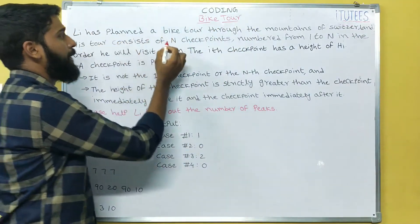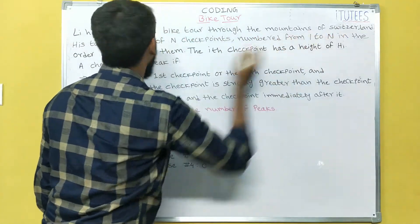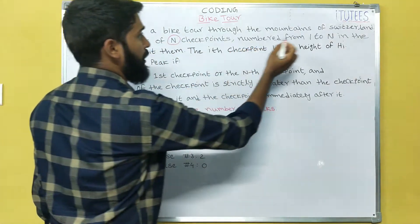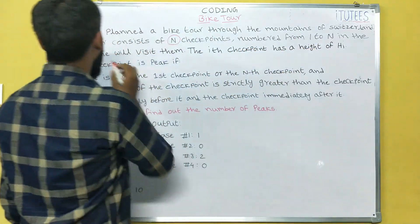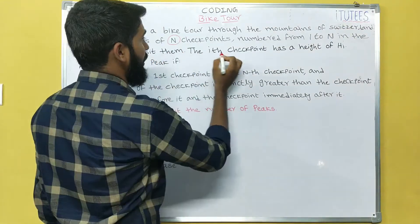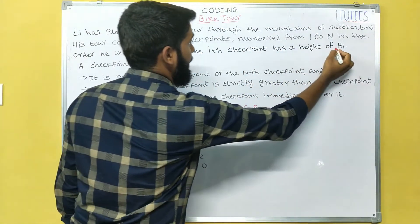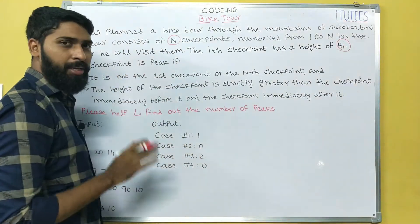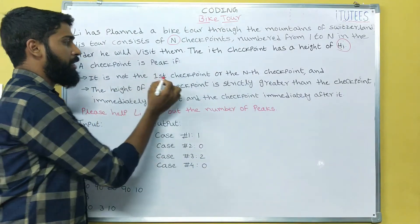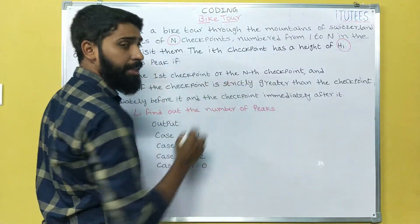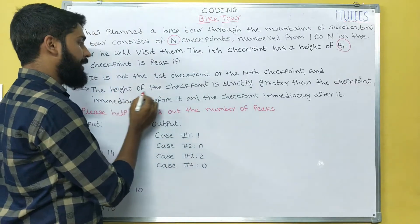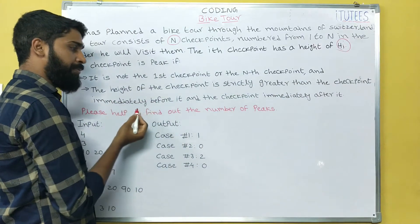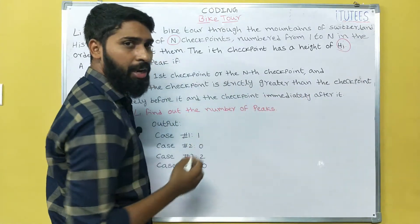Lee has planned a bike tour through the mountains of Switzerland. His tour consists of n checkpoints numbered from 1 to n in the order he will visit them. The i-th checkpoint has a height h of i. A checkpoint is a peak if it is not the first checkpoint or the last checkpoint, and the height of the checkpoint is strictly greater than the checkpoint immediately before it and the checkpoint immediately after it.